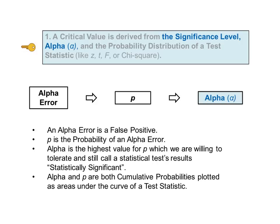There is a separate article in the book on alpha and beta errors, and there is or will be a separate video. p, the p-value, is the probability of an alpha error. And alpha, the significance level, is the highest value for p which we are willing to tolerate and still call a statistical test's results statistically significant. p and alpha are two of the four concepts at the heart of inferential statistics, which have their own videos in this video's playlist, in addition to having their own articles in the book.